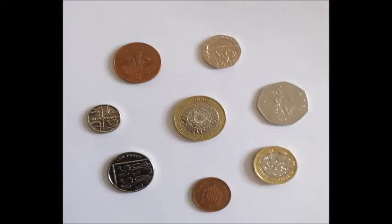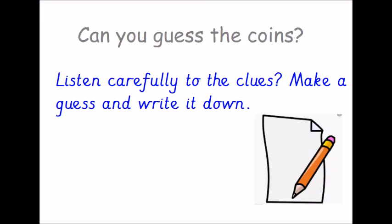Here are all the coins together. So it's important to look closely at them — at the clues, the words, the numbers and the shapes of them to see how much they are worth. We often use the word 'p' to talk about coins instead of pence, like saying 50p instead of 50 pence.